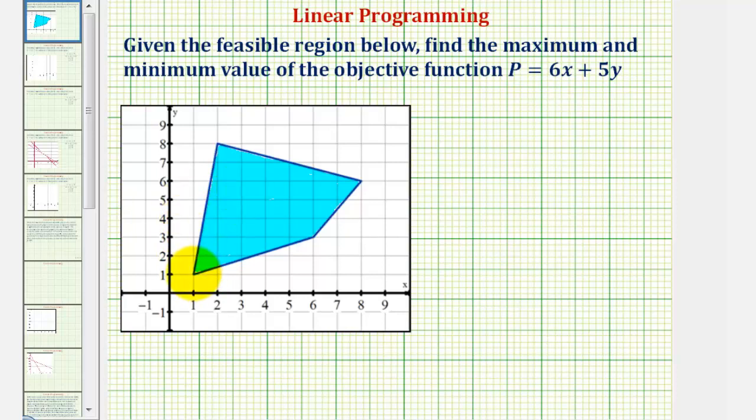So for the next step we'll find the coordinates of our vertices. Notice how there are four of them. Then we'll substitute the x and y values into our function P to determine the maximum and minimum values.